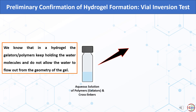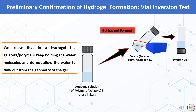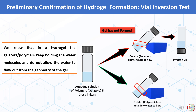We tilt the glass vial and observe the upper level of the aqueous solution. In the first case, polymer chains allow water to flow. When we invert the vial, the entire solution comes to the bottom of the inverted vial, indicating that gel has not formed. In the second case, the solution level remains stable in the tilted vial because polymer chains do not allow water to flow. Even in the inverted vial, polymer chains hold the water, confirming gel formation.